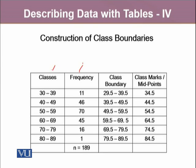When we are to construct the class boundaries from it, we firstly note down the difference between the upper class limit of the first class and lower class limit of the second class, which turns out to be 40 minus 39. Since we want to go exactly halfway through it, we will divide this difference by 2, which is 0.5.